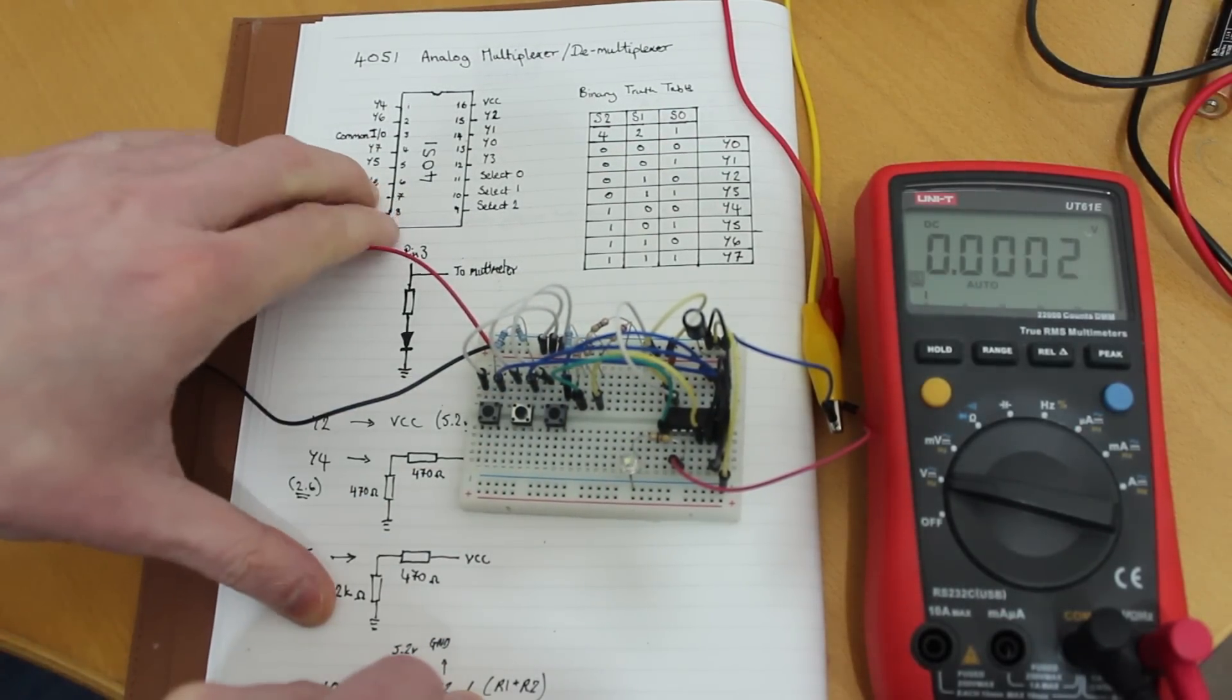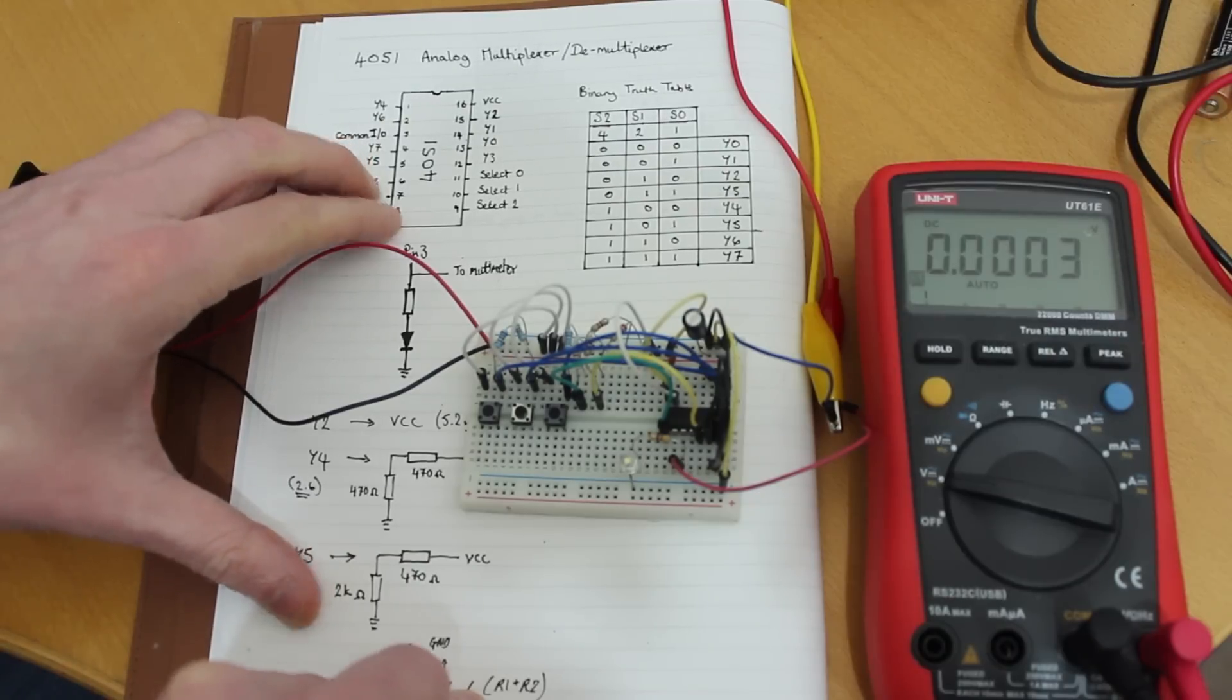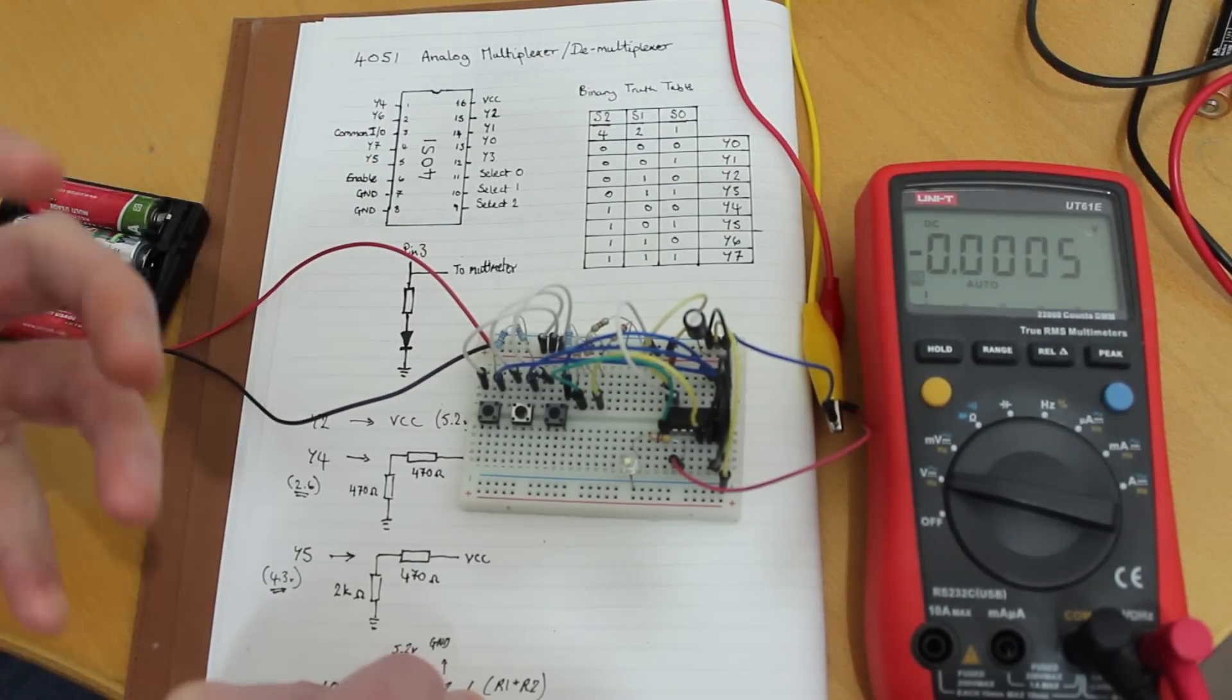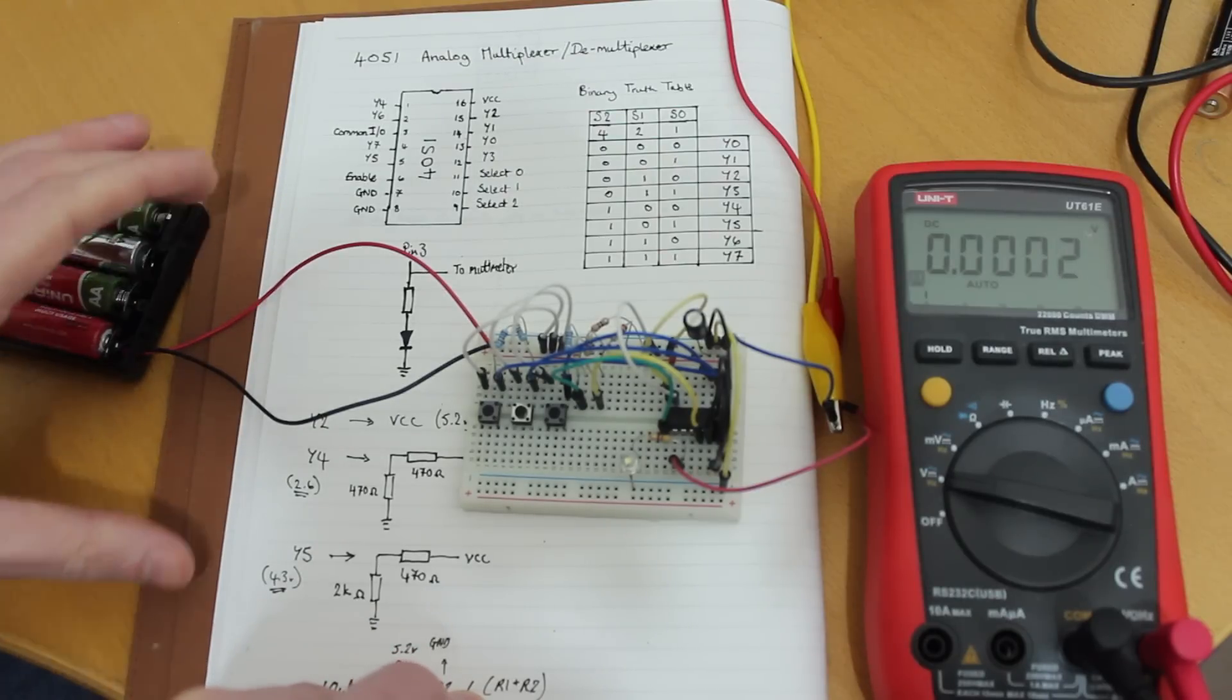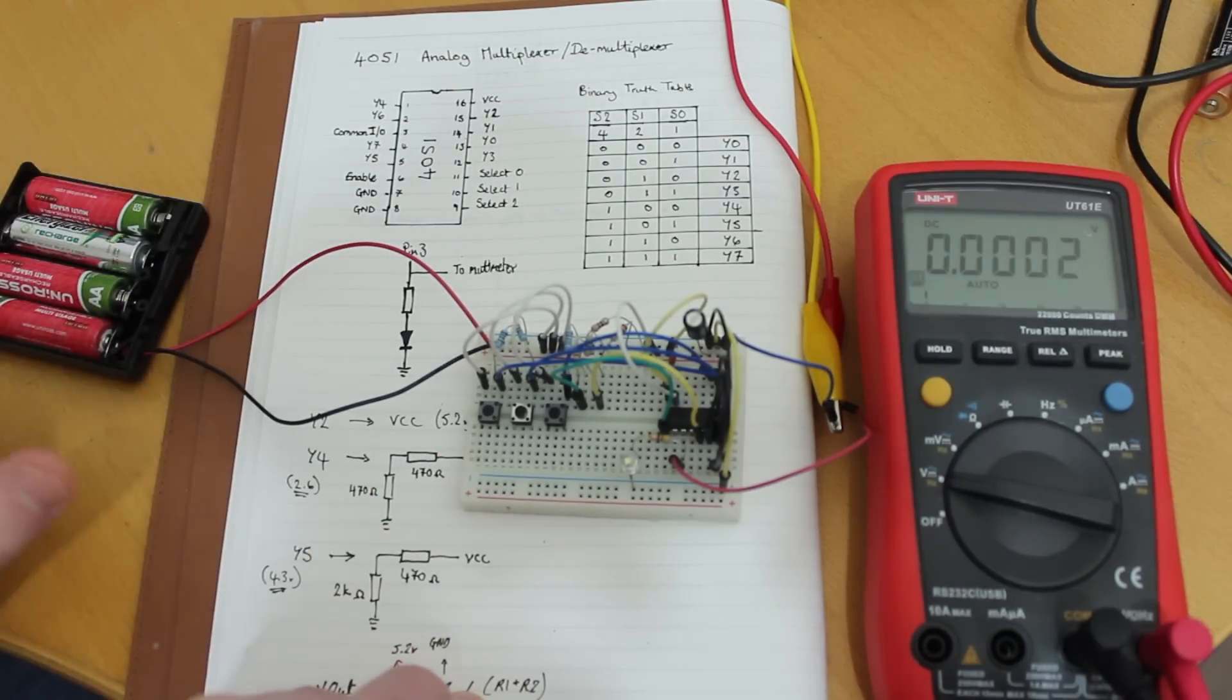So the 4051 can expand the number of analog inputs that you have on your microcontroller. But it can also expand the number of analog outputs. Now, generally with an Arduino, you're limited by the range of the ADC. But this is a true analog device. So it'll just kick out voltages that you put into the inputs.